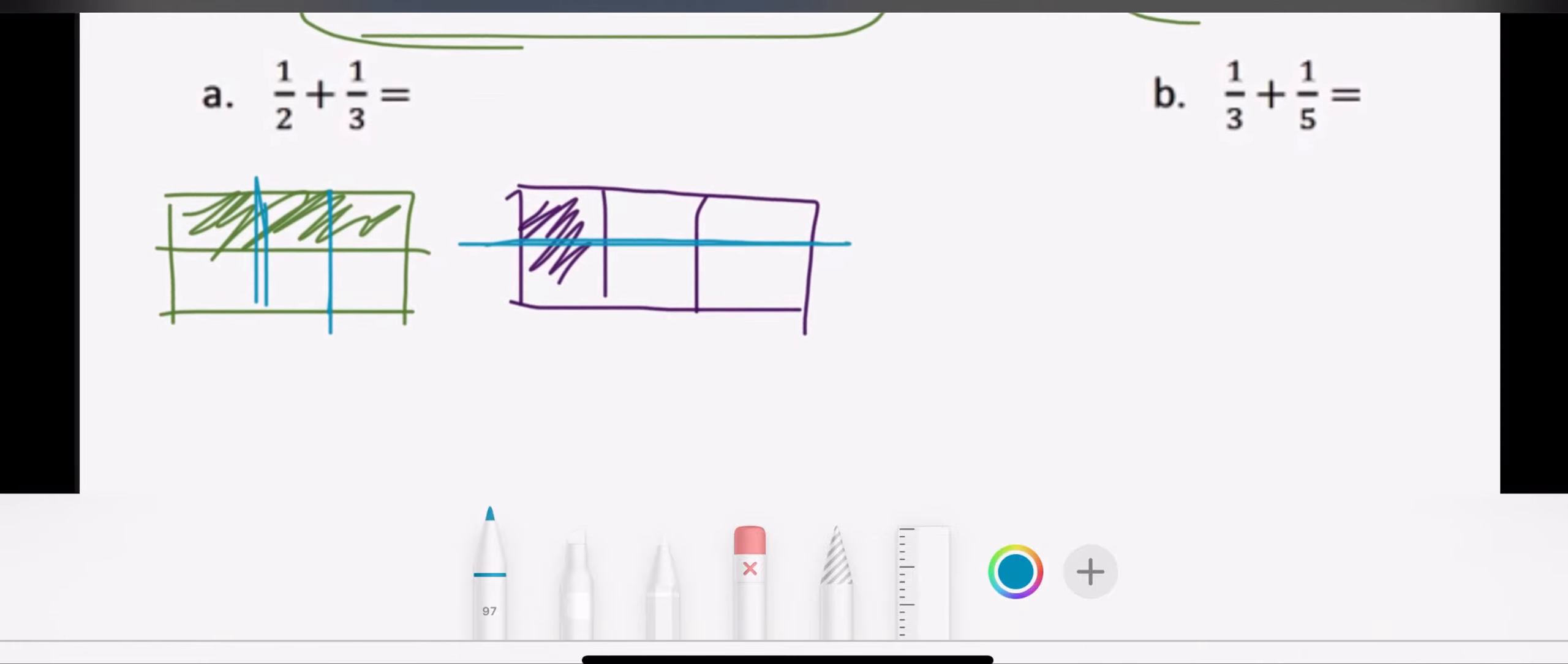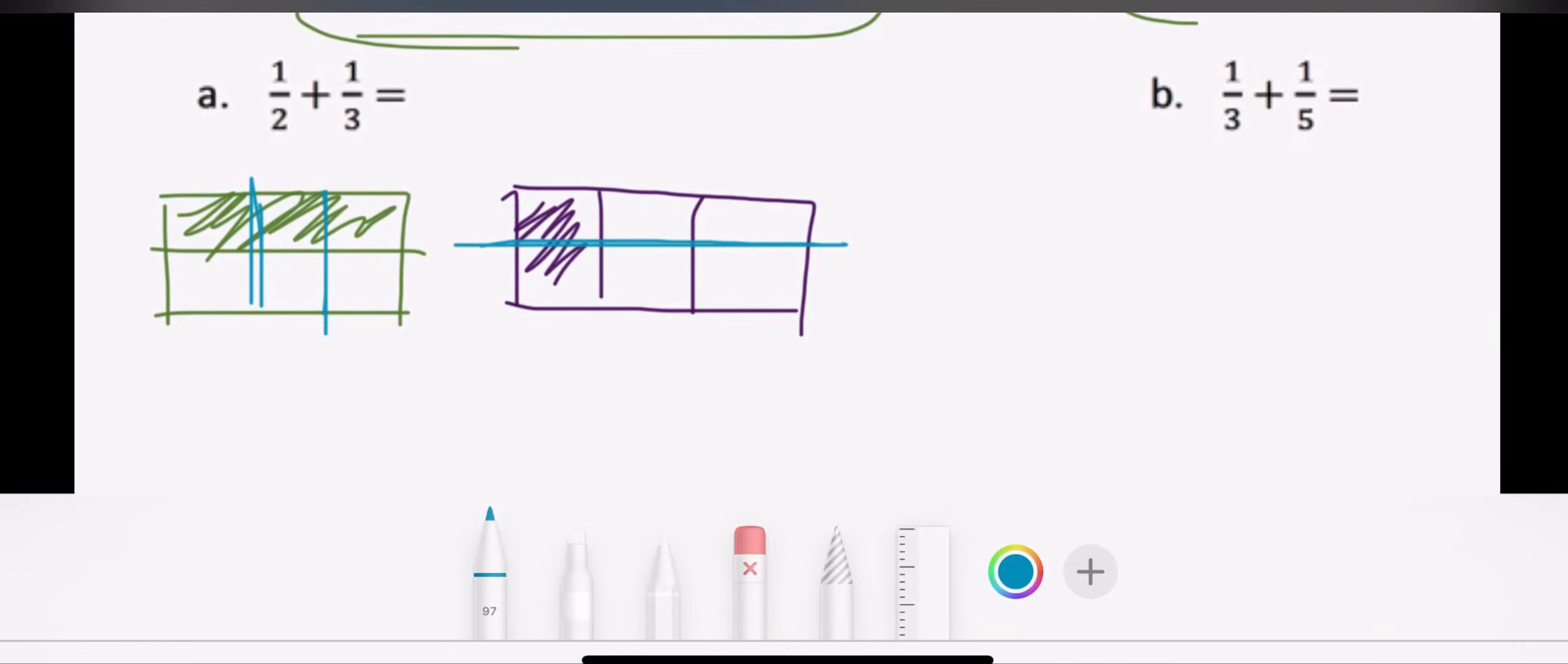So right now I'm looking and I'm seeing, oh my gosh, one half is the same as saying one, two, three out of six. One third would be equivalent or the same as two out of six. So now that I have the same denominator or the same bottom number of six, I can actually count how many pieces that I have shaded.